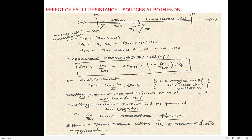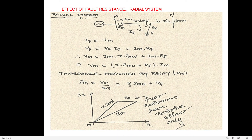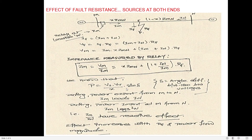Calculating the impedance measured by the relay using the same method, the result is: Z_measured = X·ZMN + (1 + IN/IM)·RF. The only difference from the radial case is the additional term (IN/IM)·RF.